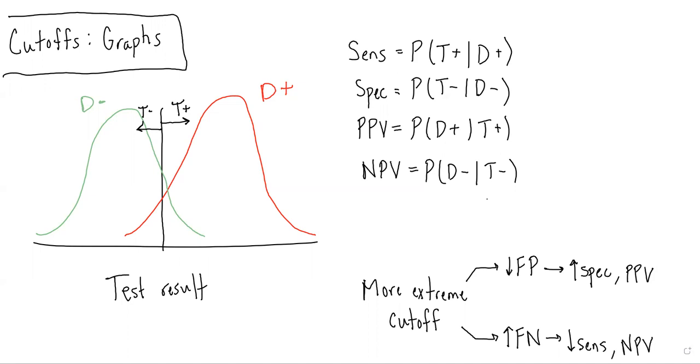So when you see this graph, what you're really looking at is test result along the x-axis with higher test results as you move left to right. And the curves actually represent patients with disease and patients without disease.